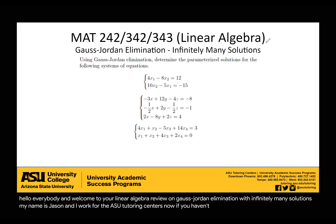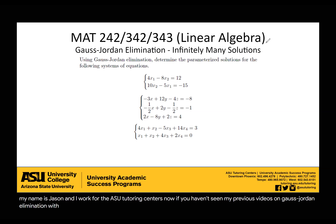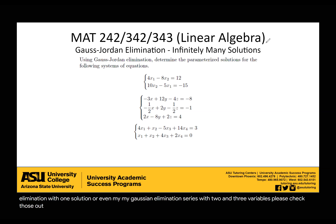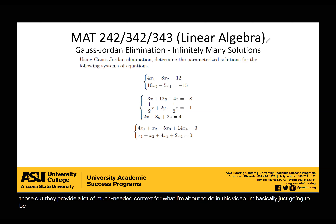Now, if you haven't seen my previous videos on Gauss-Jordan elimination with one solution, or even my Gaussian elimination series with two and three variables, please check those out. They provide a lot of much-needed context for what I'm about to do. In this video, I'm basically just going to be getting my matrices in reduced row echelon form, and then finding the solutions to my system of equations.